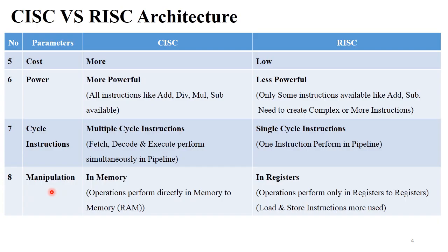The next point is manipulation. CISC architecture performs each and every manipulation or operation memory-to-memory — meaning all operations are performed in RAM. But in Reduced Instruction Set Computer, all operations are performed in register-to-register mode. That's why RISC uses load and store instructions more: it loads data into registers, then registers load that data into memory. So CISC performs manipulation in memory, and RISC performs manipulation in registers.